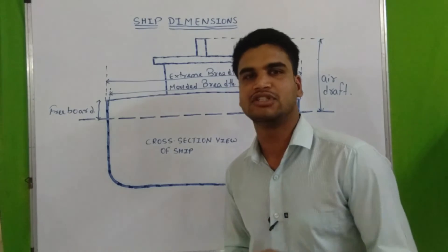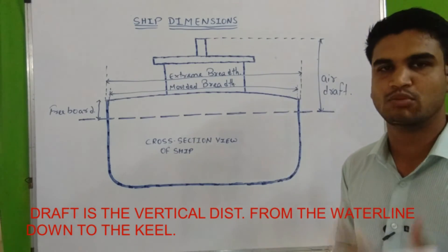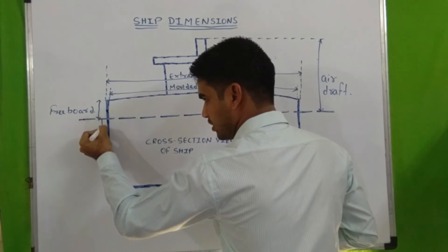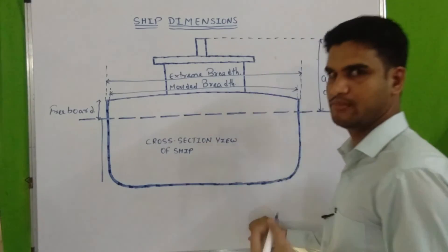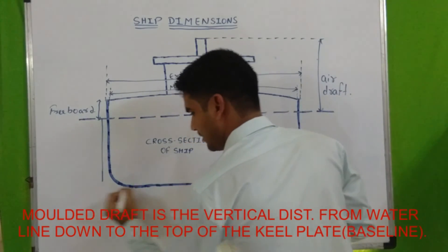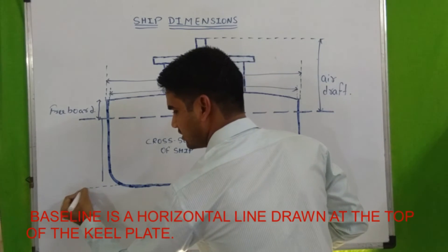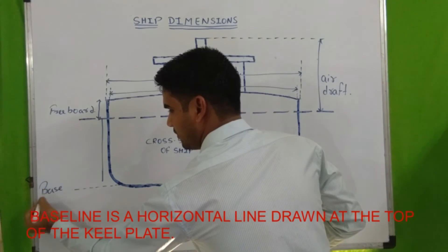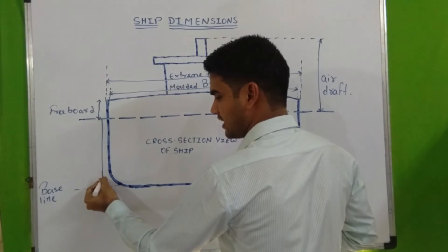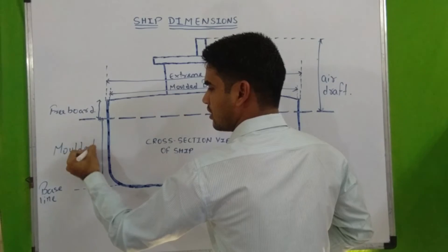Next is draft. Draft is the vertical distance from water level down to the keel plate. We have two different terms in draft: molded draft and extreme draft. Molded draft means when we measure from water level down to the baseline. Baseline means the horizontal line drawn to the top of the keel plate. The vertical distance from water level to the baseline is known as molded draft.